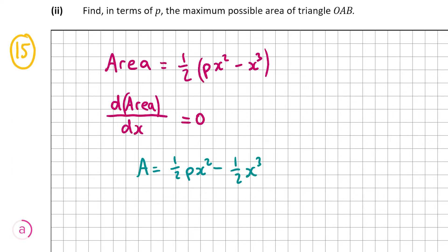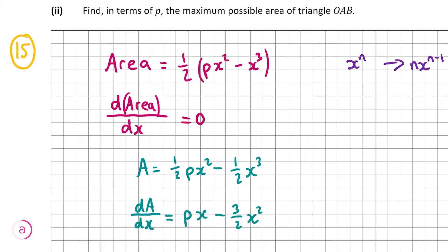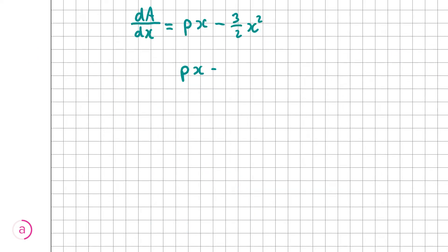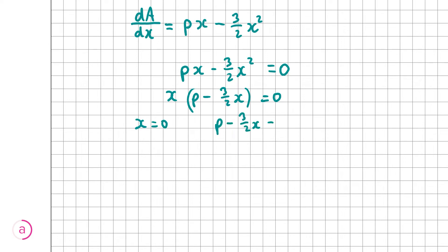Differentiating half px squared minus half x cubed — remember if we have a term x to the power of n, differentiating gives n times x to the power of n minus 1. So differentiating half px squared gives px, and differentiating minus half x cubed gives minus 3 over 2 x squared. Now we put this equal to 0 and solve for x. Factorizing, we take x outside to get x times (p minus 3 over 2 x) equals 0, giving x equals 0 and p minus 3 over 2 x equals 0.